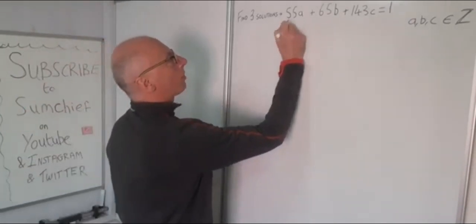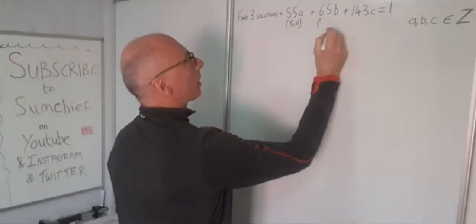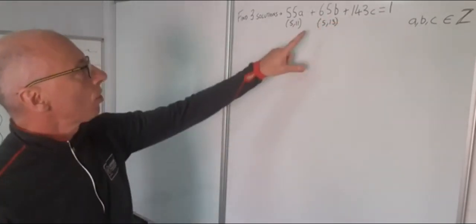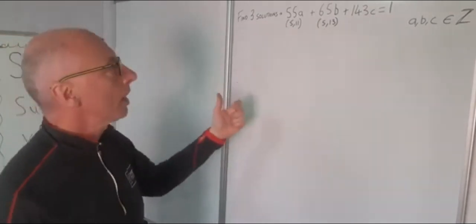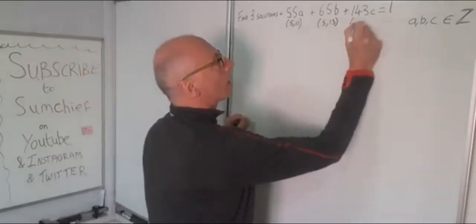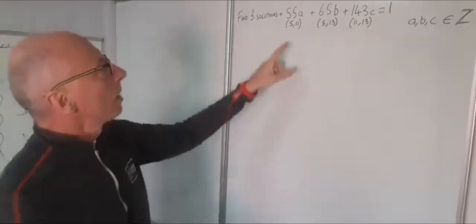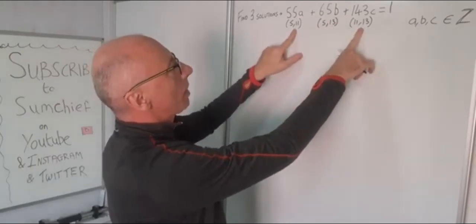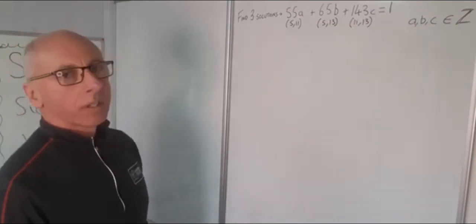So 55 — the prime factorization of that is 5 and 11. And 65 — the prime factors of this one are 5 and 13. So straight away we can see we've got a 5 and a 5 in common, so they match. And then 143 is made up of 11 and 13. So we can see the 13 is a common factor with 65, and the 11 is a common factor with 55. So we can match these up somehow and find a solution that way.